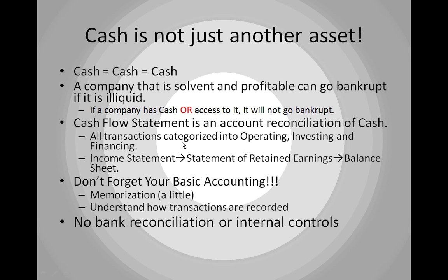The cash flow statement is basically an account reconciliation of the cash account, using the account analysis tool from Chapter 5. You start with beginning cash and break all the accounting transactions of the year into the operating, investing, and financing sections — those three categories you memorized in Chapter 1. Since the income statement flows into the statement of retained earnings, which flows into the balance sheet, the balance sheet really contains all of the accounting transactions of the period, and that's where we'll concentrate mechanically.